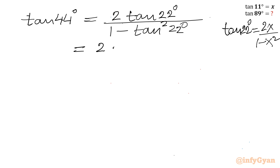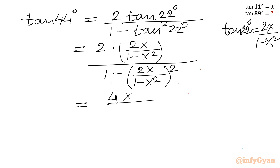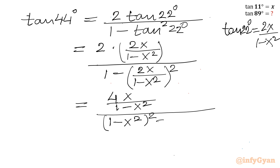Let's apply. So we have 2 times (2x over 1 minus x squared), divided by 1 minus (2x over 1 minus x squared) whole squared. The numerator becomes 4x divided by 1 minus x squared, and the denominator becomes (1 minus x squared) squared minus (2x) squared, all divided by 1 minus x squared.